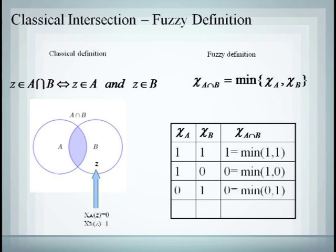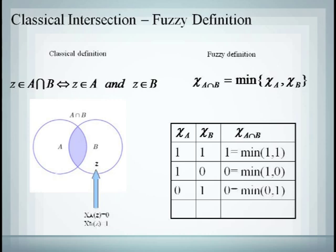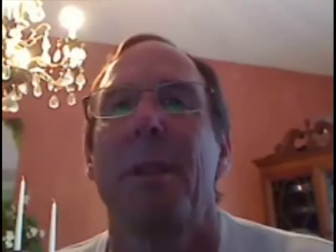But if Z does not belong to either A or B, then the minimum will be 0, which implies that Z does not belong to the intersection set. The same is true for union and complement operations. So this choice for our fuzzy operations does, in fact, represent a generalization of our classical set operations.